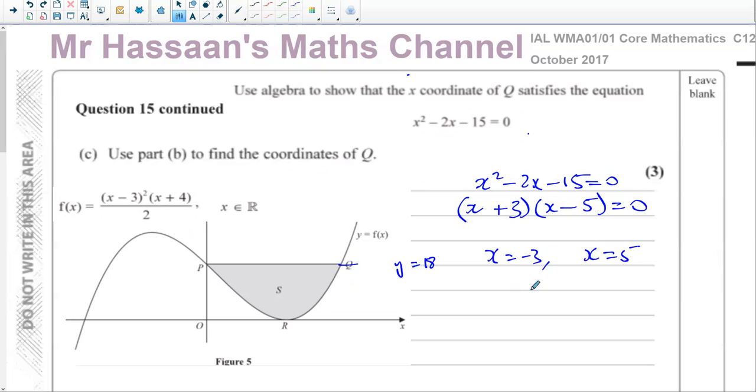So we can say x is equal to negative 3 and x is equal to 5. And of course, Q must be where x equals 5 because it's positive. So Q is going to be 5, and we know the y coordinate is 18. So 5, 18, that is the answer to part C.